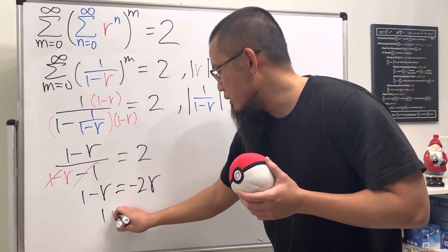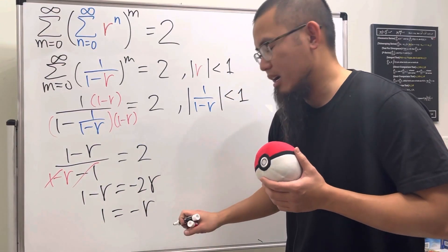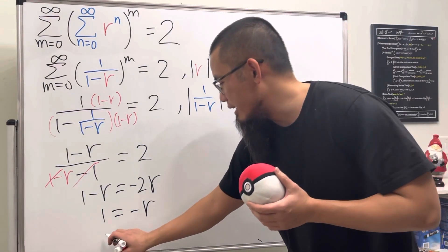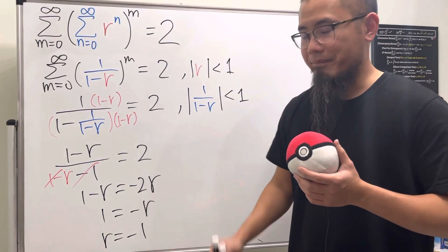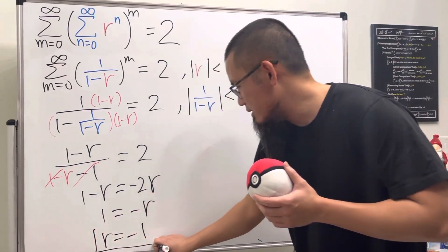Check this out. Add r on both sides, we get one is equal to negative r. So all in all, we are saying r is equal to negative one. Yes, easy, huh?